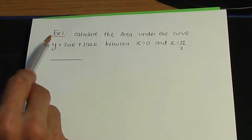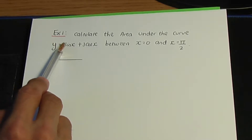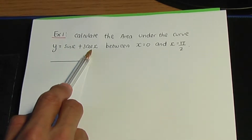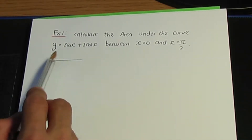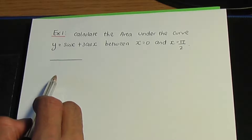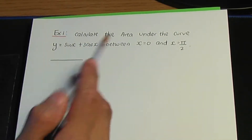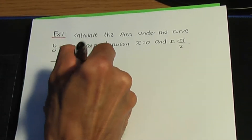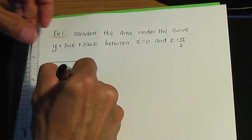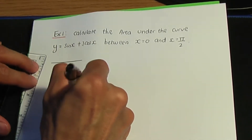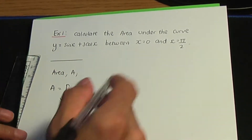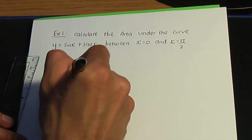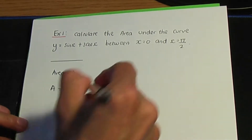Right back to the paper and pen. Let's try this problem. Example one: calculate the area under the curve y equals sine x plus 3 cos x between x equals zero and x equals pi over two. To work out the area A, remember the formula: you integrate y with respect to x, with the limits of the integral being zero and pi over two.